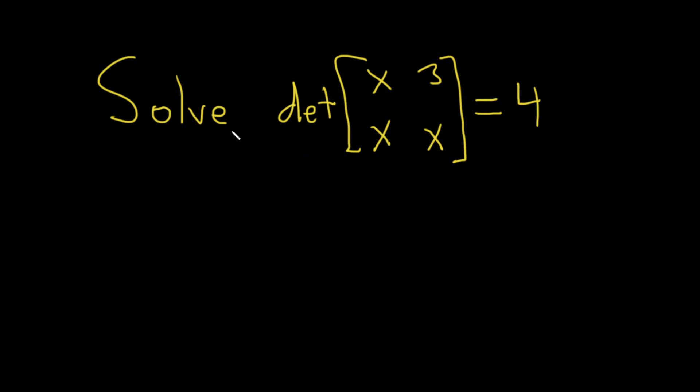Hello, in this problem we're going to solve this equation that involves a determinant. We have the determinant of the 2x2 matrix with entries x, 3, x, x, and that is equal to 4.